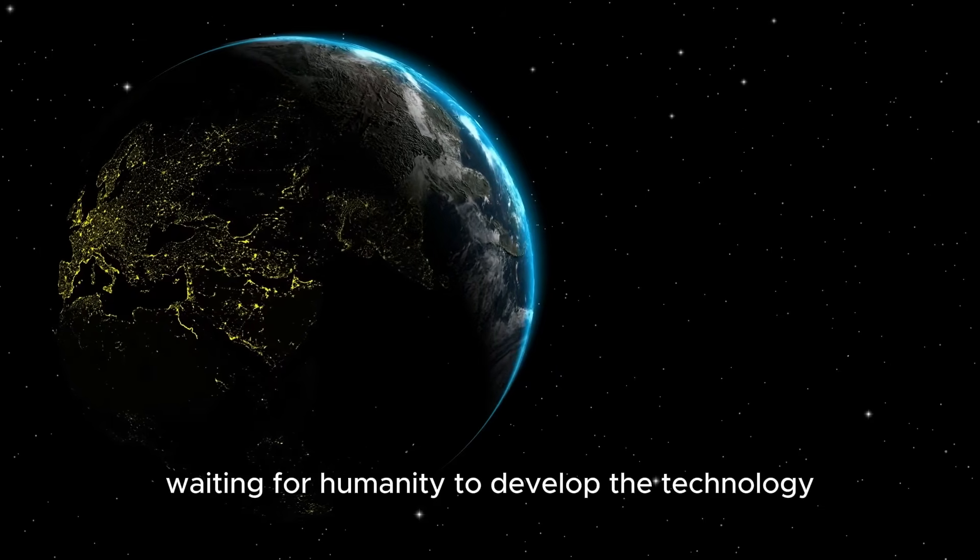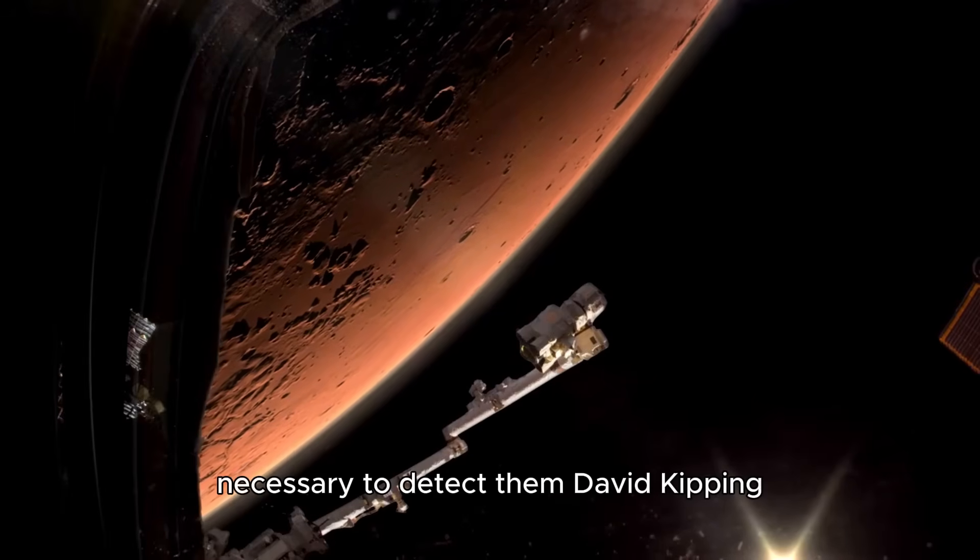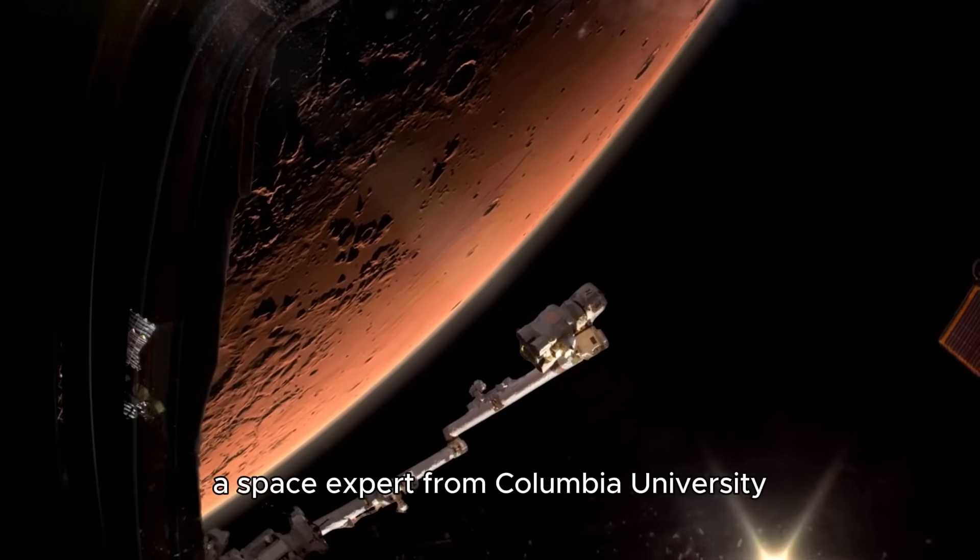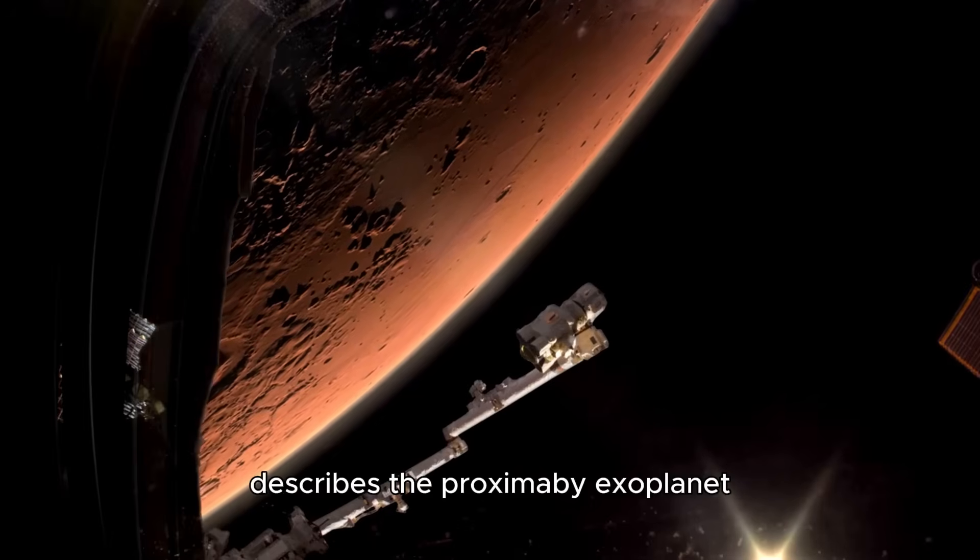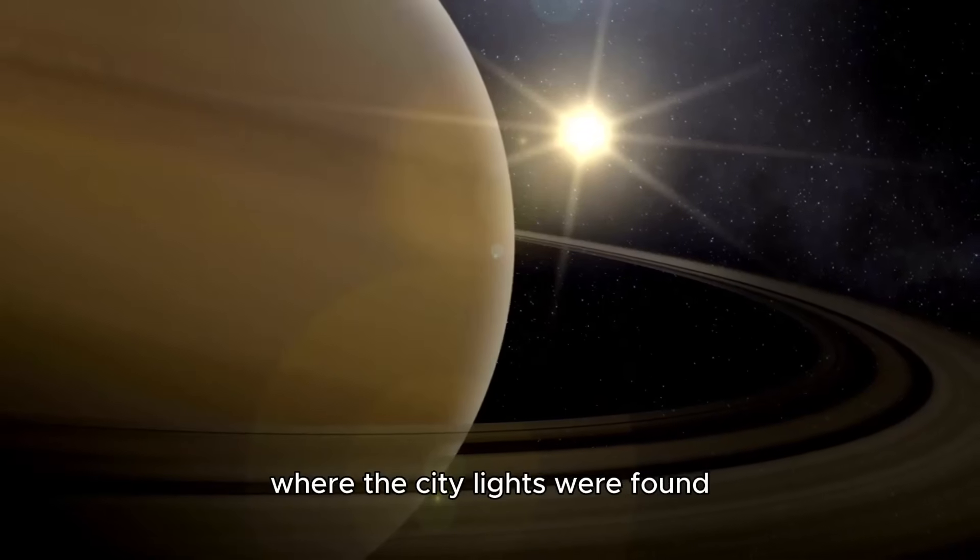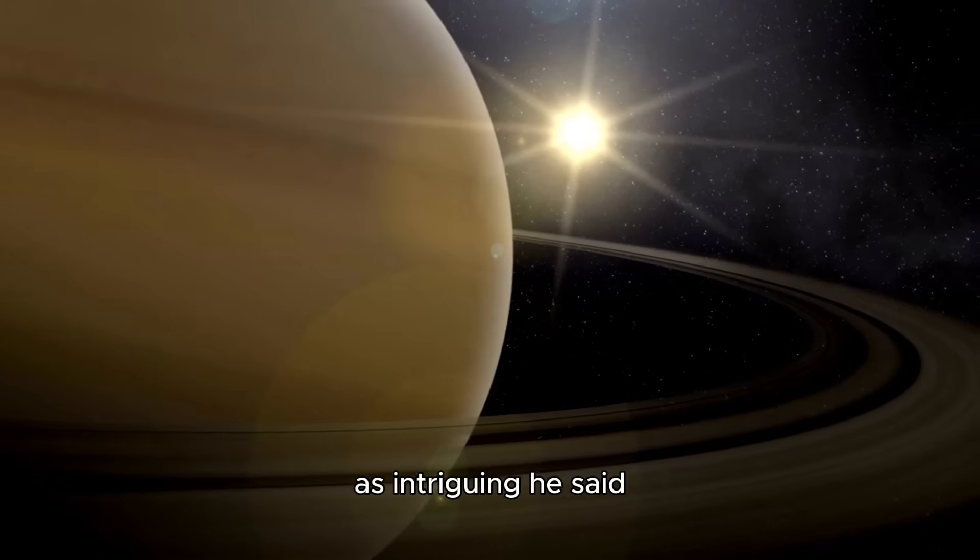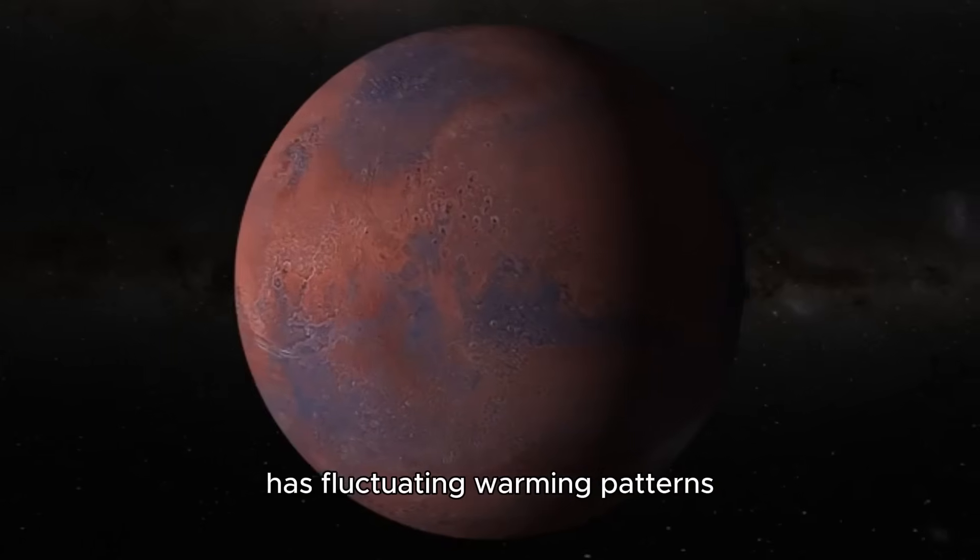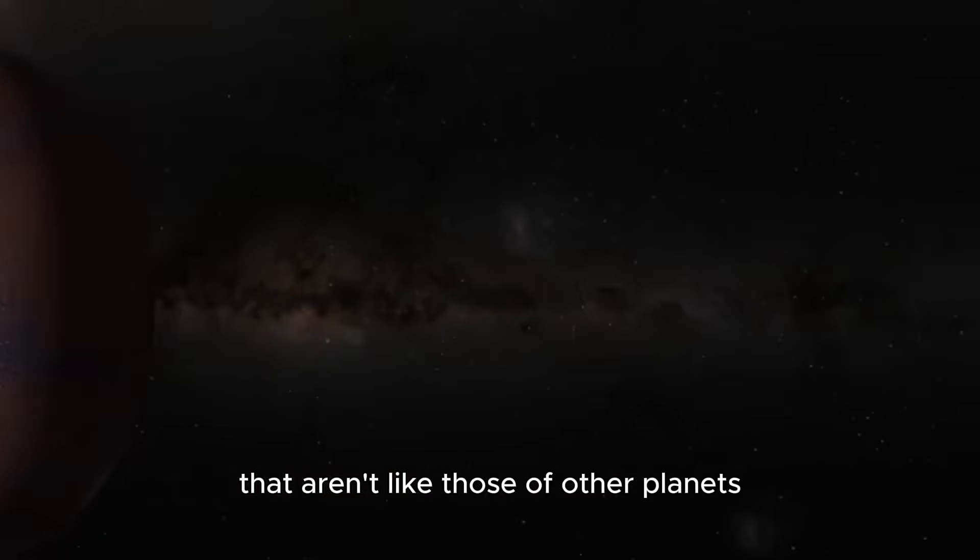David Kipping, a space expert from Columbia University, describes the Proxima B exoplanet where the city lights were found as intriguing. He said so because this star system, closest to us, has fluctuating warming patterns that aren't like those of other planets.